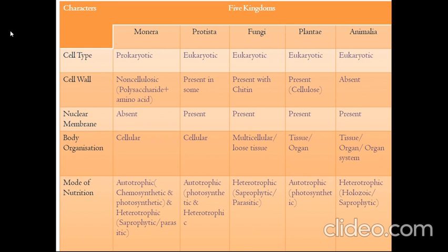The five kingdoms have a diverse range of modes of nutrition, and we can classify them by this topic too. Monera and Protista can be autotrophic, meaning they can make their own food, and heterotrophic, meaning they cannot make their own food. Fungi are always heterotrophs; they grow on dead plants or animals like saprophytes, and also on living organisms like parasites. Plants are photo-autotrophs, making their own food by photosynthesis, and animals are always heterotrophs, dependent on plants and other animals for food, like holozoic, or sometimes saprophytes.